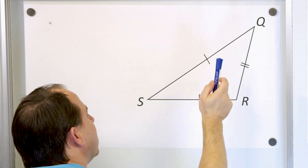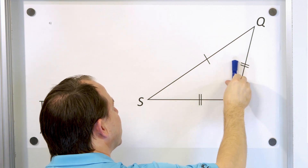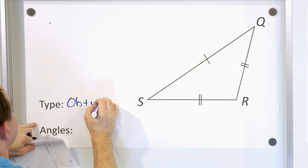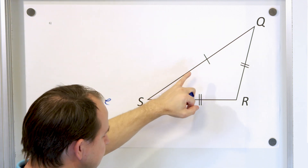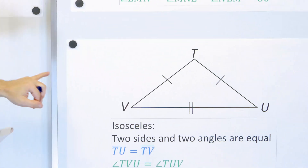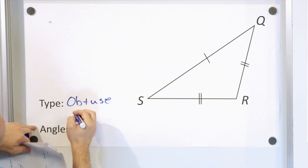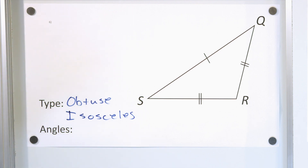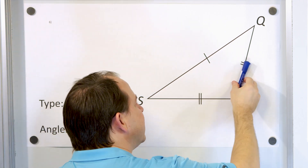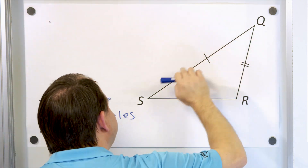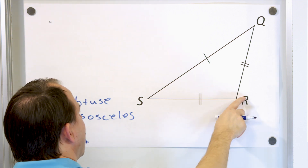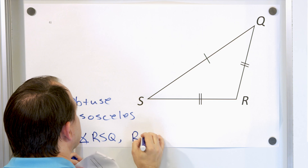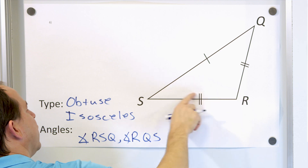Problem six: this is an acute angle, this is an acute angle, but this one is larger than a right angle — it's an obtuse angle. So it's an obtuse triangle. These two sides are equal but the third is different, making it isosceles. So it's an obtuse isosceles triangle. The angles that measure less than 90 degrees are angle RSQ and angle RQS.